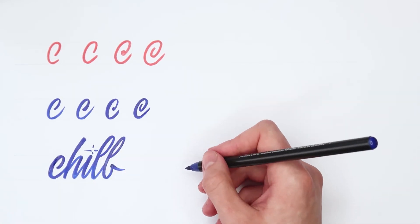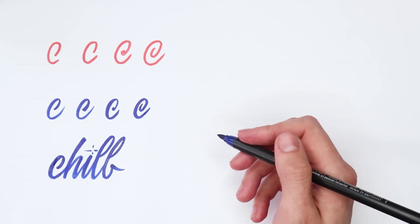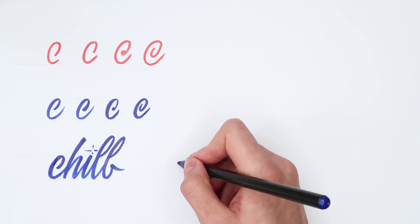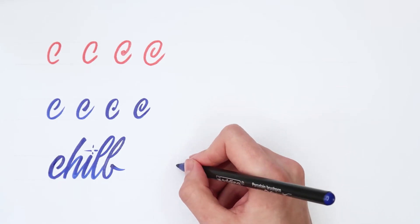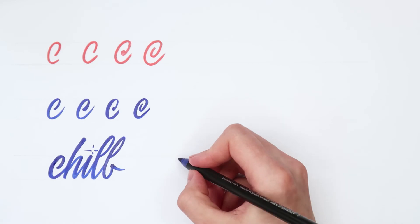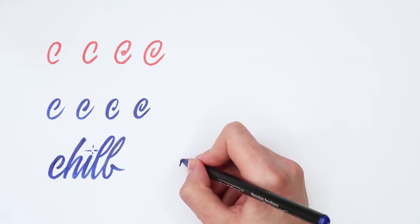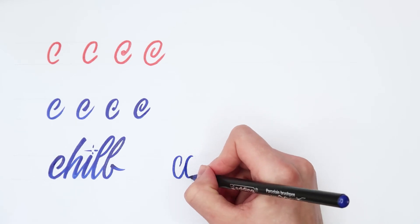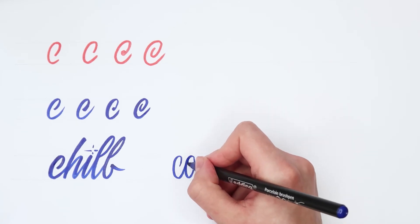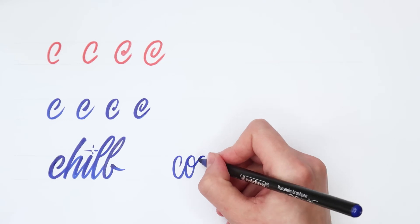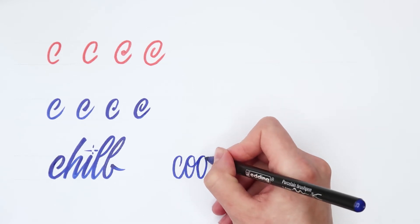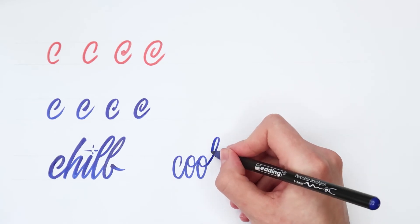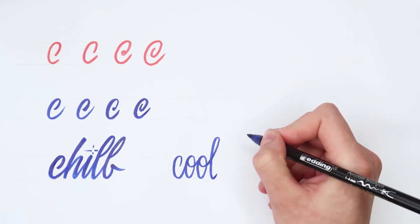Let's try another word and a little bit different style. Let's try the word cool. It's getting pretty cold here. Okay, let's try this variant of the letter C. C, O, O, and L.